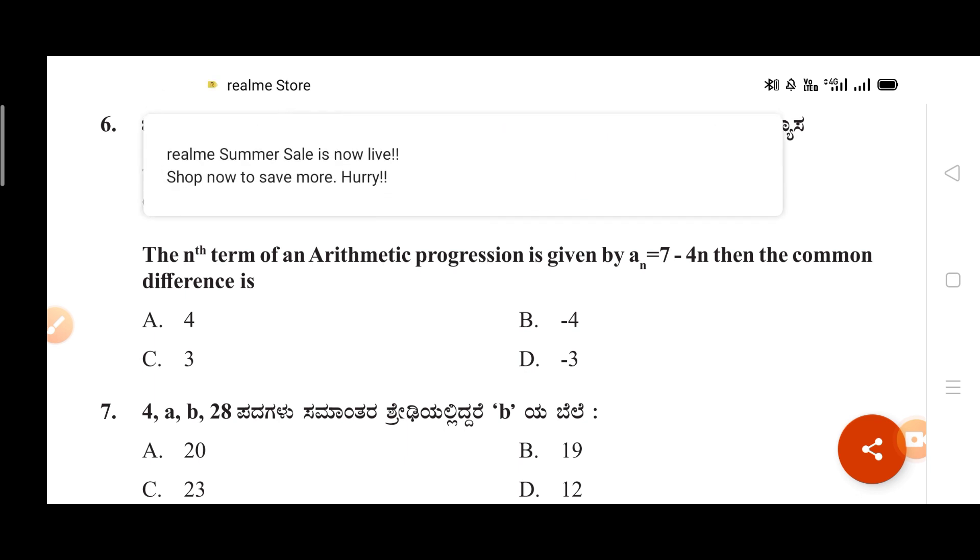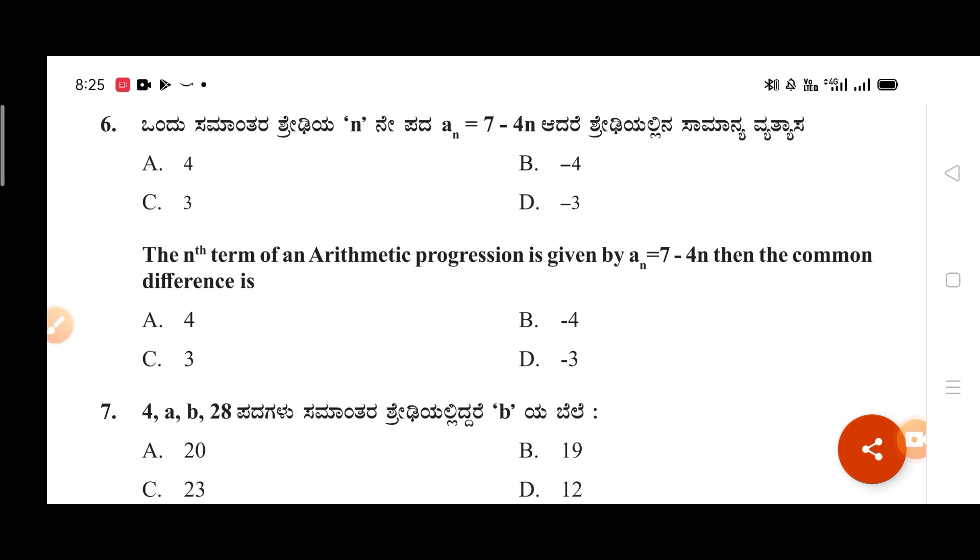Now for the sixth question: The nth term of an arithmetic progression is given by aₙ = 7 - 4n. Then the common difference is - you need to find the common difference. There are four options.